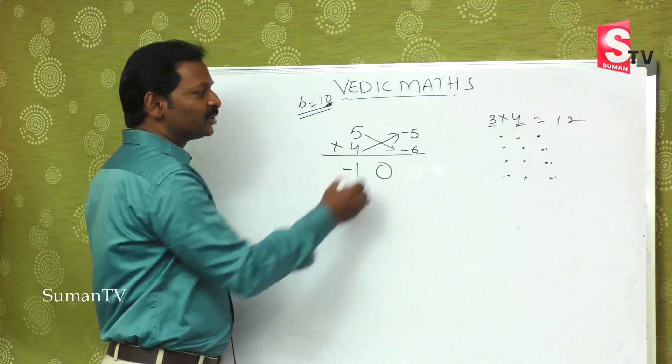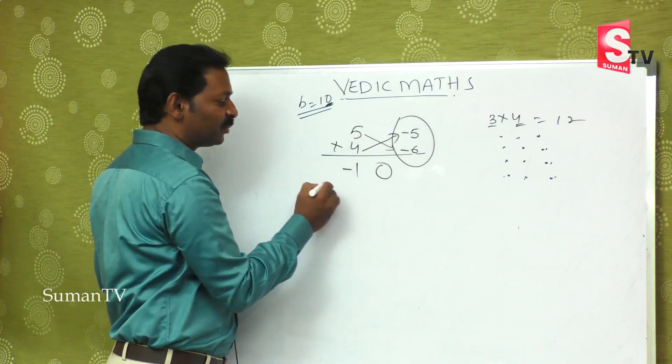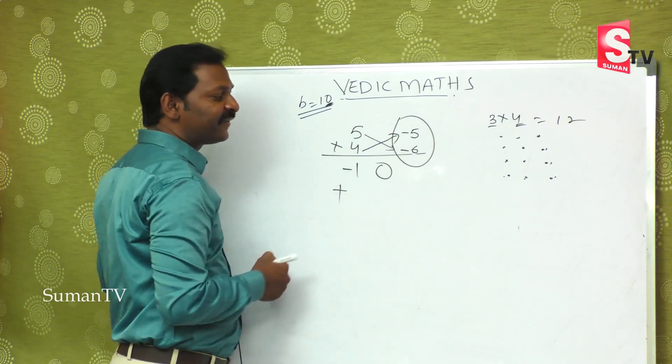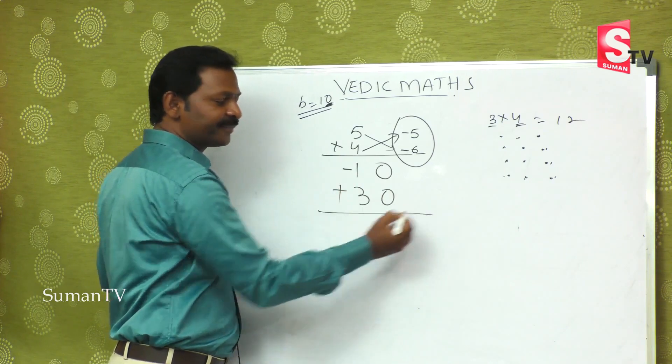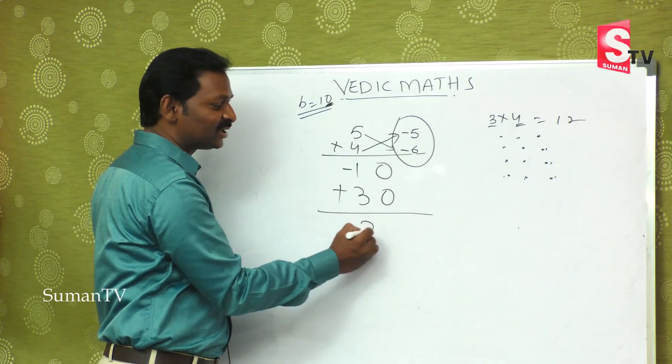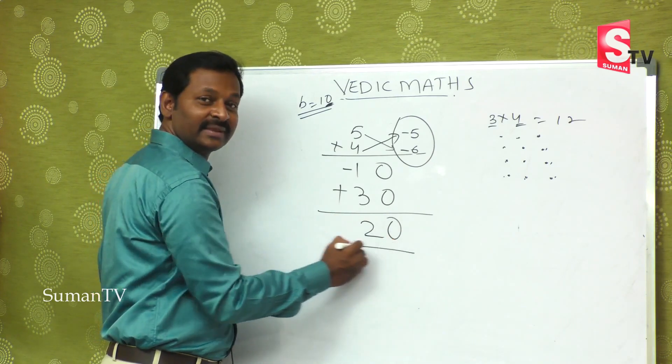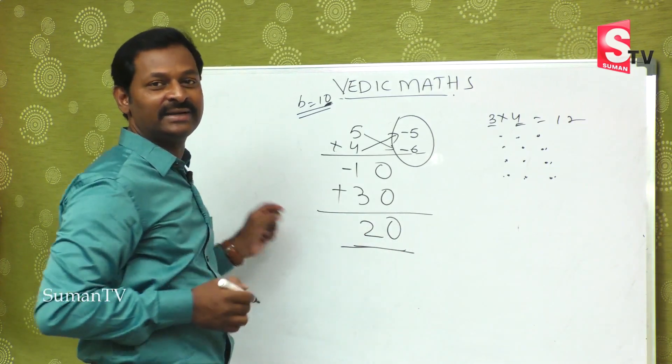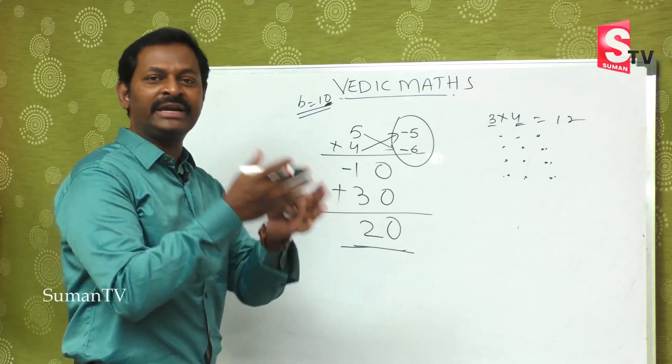5 minus 6, 4 minus 6. Second place is zero. Minus into minus is plus, 6 × 5 is 30. 30 minus 10 gives 20. This is our basic methodology.